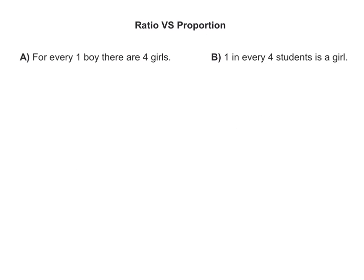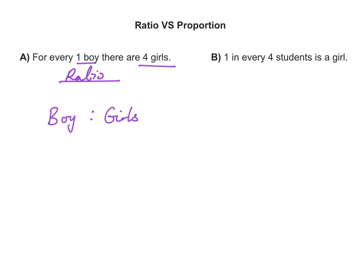Here we have two statements. Statement A says: for every one boy, there are four girls. Statement B says: one in every four students is a girl. These two statements may look very similar, but they are actually different. Statement A is actually a ratio, because it is telling us the relationship between two categories — boys and girls — and the quantitative relationship is that for every one boy, there are four girls.